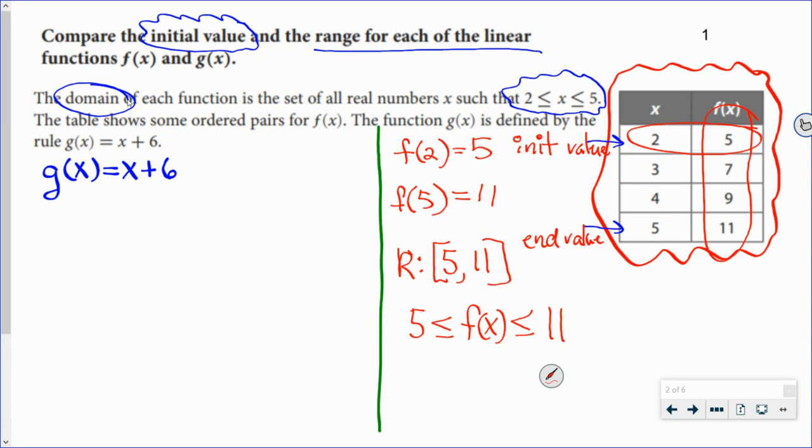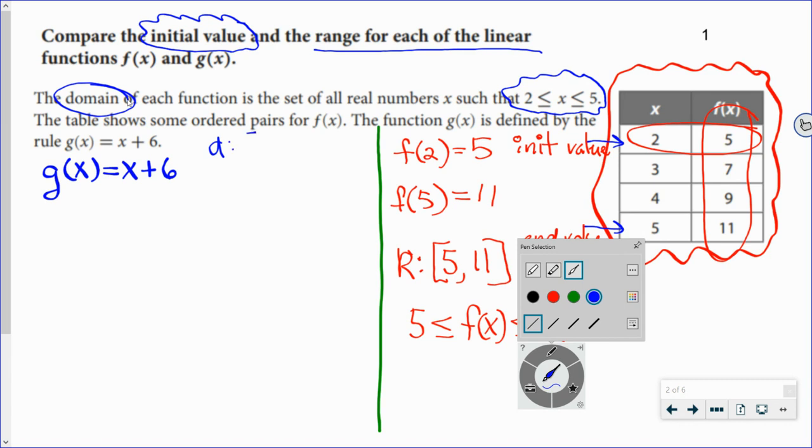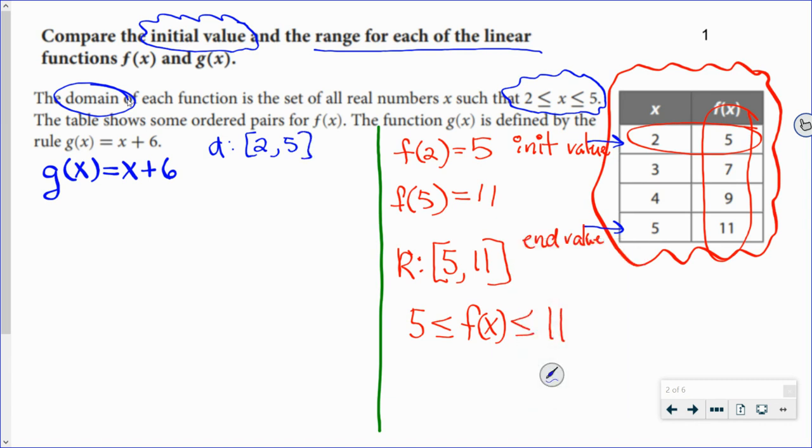Now it's not as obvious for my g function. I know that my domain with the g function goes from 2 to 5, just like the domain does with the f function. To find my initial value, I put a 2 in for x: g(2) equals 2 plus 6, which equals 8. That's my initial value.